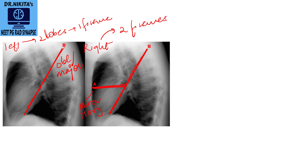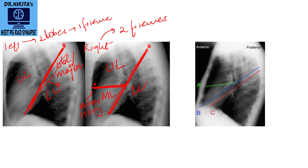The horizontal fissure separates the upper lobe from the middle lobe of the right lung. The oblique fissure on the left side separates the upper lobe from the lower lobe. Whatever is posterior to the oblique fissure is the lower lobe on both sides. So we have: right upper lobe, right middle lobe, right lower lobe, left lower lobe, and the entire anterior region on the left is the left upper lobe.